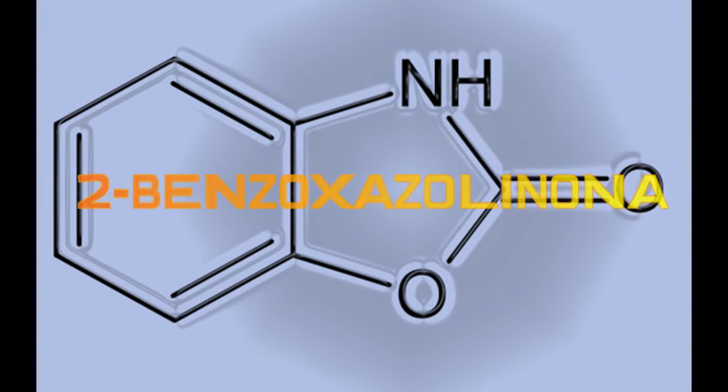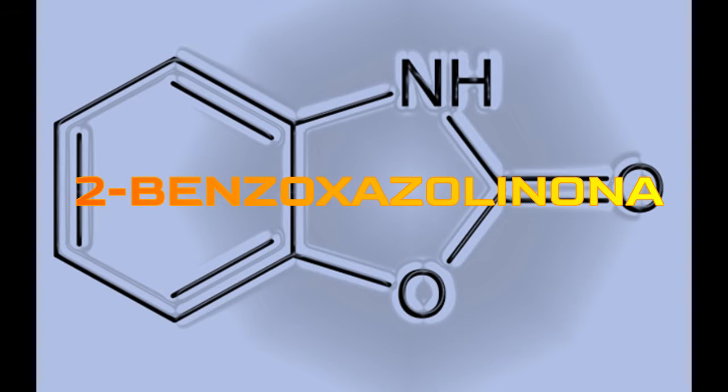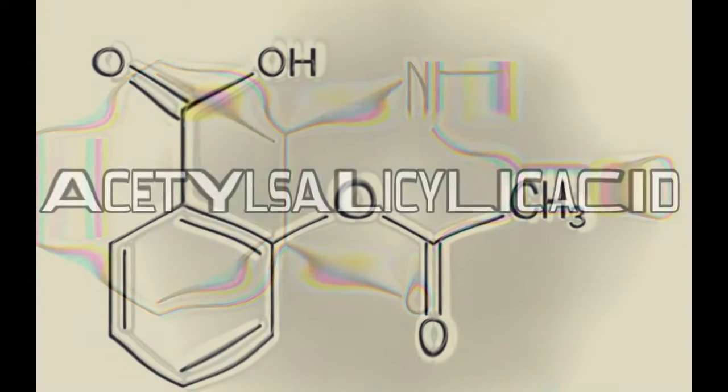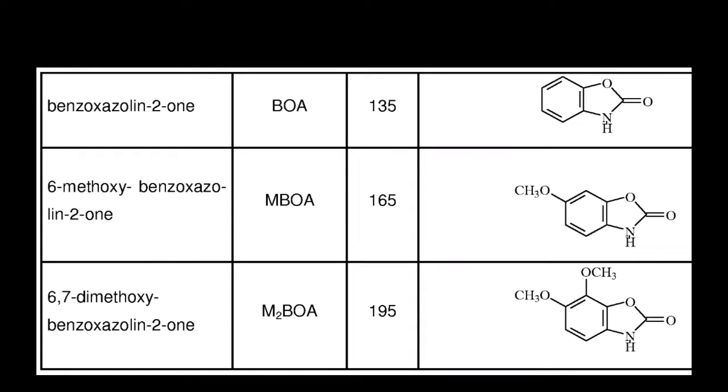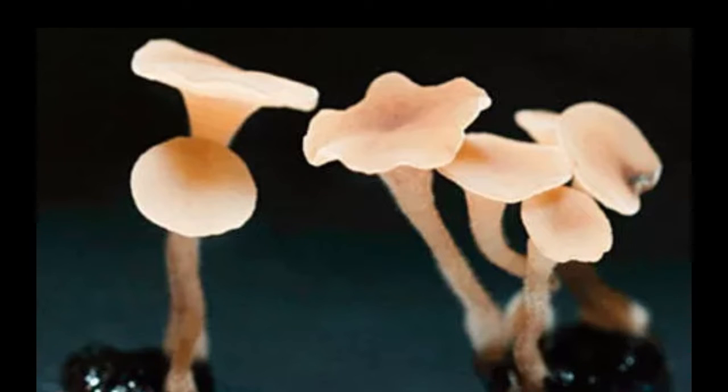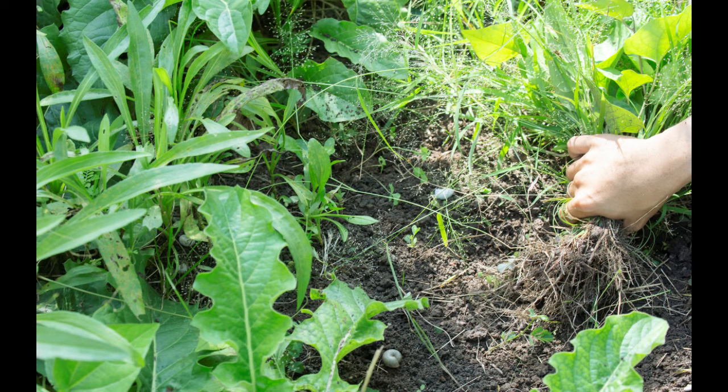In this video, we will learn how to obtain 2-benzoxazolinone using acetylsalicylic acid as the starting material. Benzoxazolinone is a degradation product of benzoxazinoid used to reduce the germination and growth of fungi and harmful plants in agriculture.